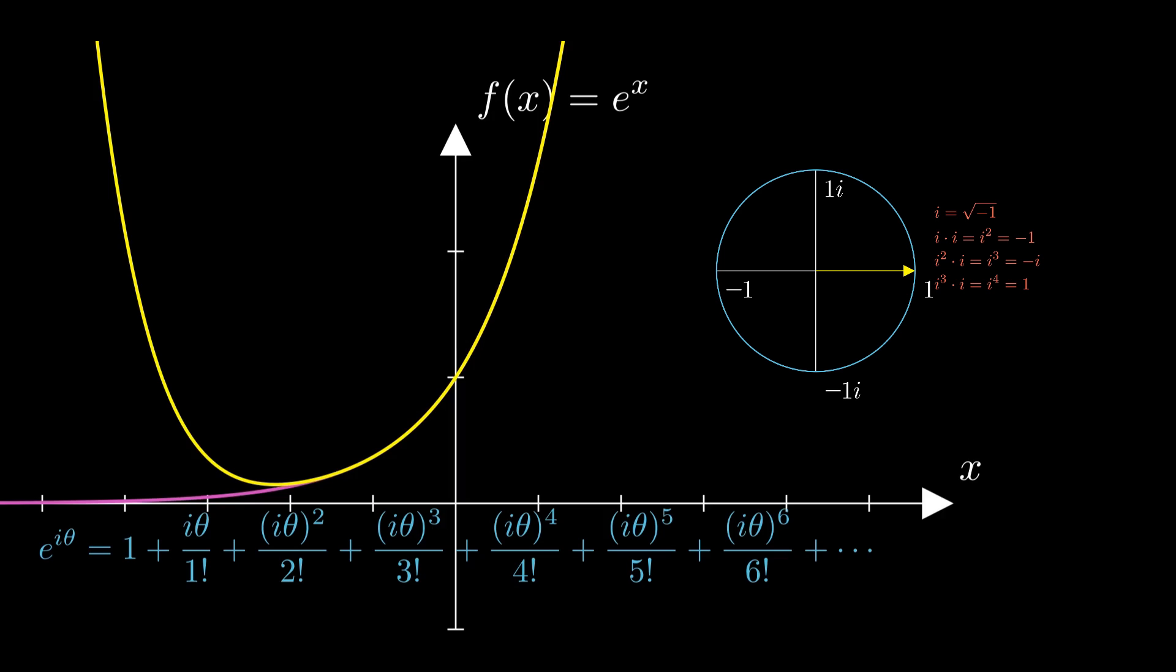You might observe, each time we raise the power of i, the line moves by 90 degrees, cycling back and forth between 1, minus 1, i, and minus i.